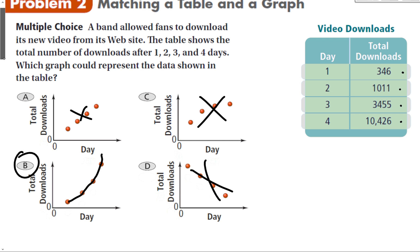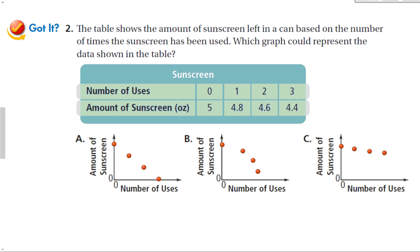For the next problem: the table shows the amount of sunscreen left in the can based on the number of times it's been used. After zero uses there are 5 ounces; one use, 4.8; two uses, 4.6; three uses, 4.4. Each use only removes 0.2 ounces — a constant decrease. One graph shows going down to zero very quickly after four uses, which is not true since there's still a lot left. The correct answer is C — a steady, constant decrease.